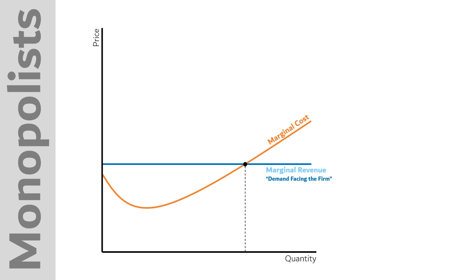Sometimes we say that demand facing the firm is perfectly elastic, meaning that the producer can't really impact the price at all. They're price takers. No one is willing to pay more than the market price for this farm's corn.